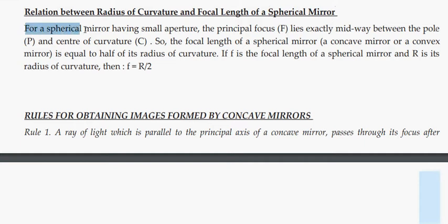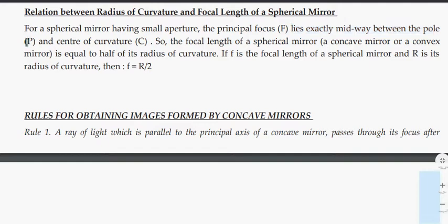For a spherical mirror having small aperture, the principal focus F lies exactly midway between the pole P and center of curvature C. The principal focus on the spherical mirror is the pole P and center of curvature C.